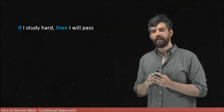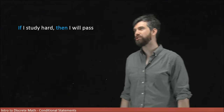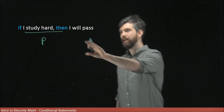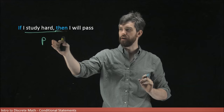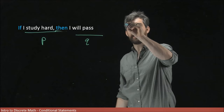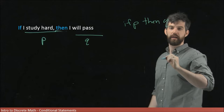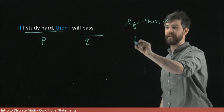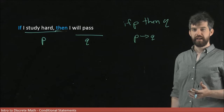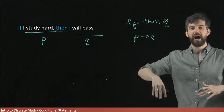Consider the statement: if I study hard, then I will pass. This is a conditional with two components. Let P represent 'I study hard' and Q represent 'I will pass.' We can rewrite this as 'if P, then Q,' and combine it into shorthand using the implication arrow: P implies Q. All of these mean the same thing — the English phrases are replaced with logical symbols, and the implication arrow hides the words 'if...then.'